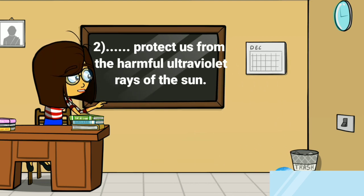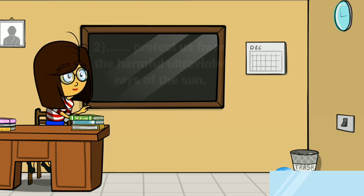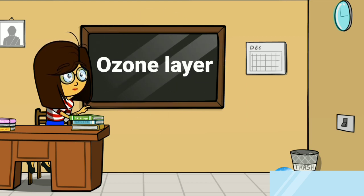The second question is: what does protect us from the harmful ultraviolet rays of the sun? A part of the second layer of the atmosphere, that is the stratosphere, contains the ozone layer, and this ozone layer protects us from the harmful ultraviolet rays of the sun. So the second answer is ozone layer.